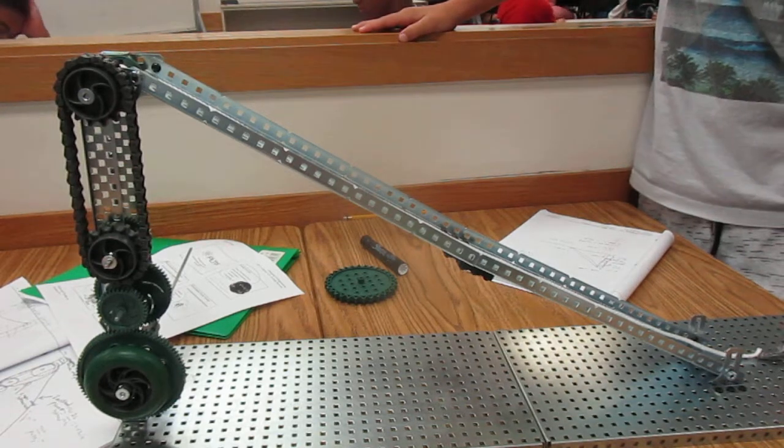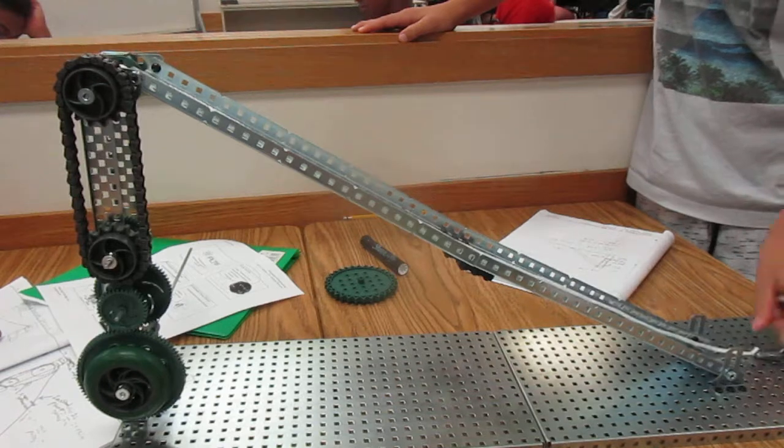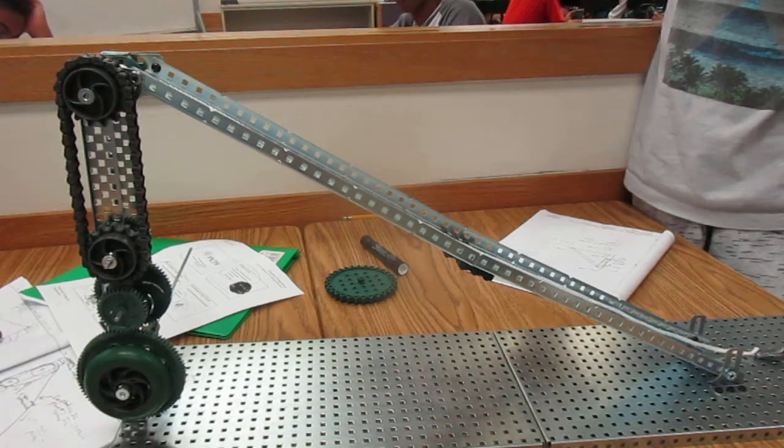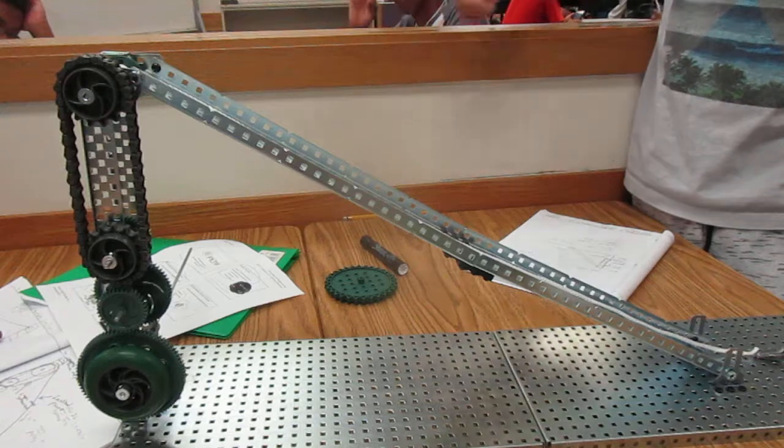For our compound machine, our goal is to push a fishing weight 12.5 inches into the air, and we do this by using an incline plane.